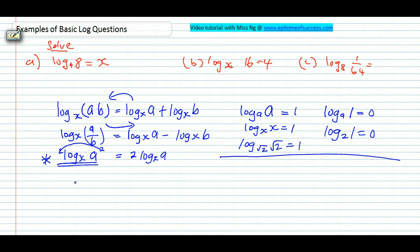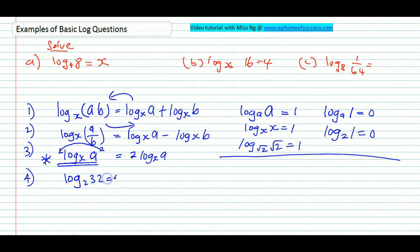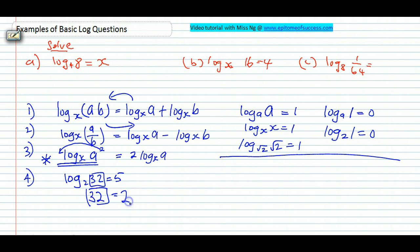Another basic skill — there are 4 in total. The other one is to convert logarithm to indices and vice versa. For example, log_2(32) = 5. How do I know? Because if you convert this to index form: 32 is the big number and remains, the base of the log becomes the base of the index, and the answer 5 becomes the power.